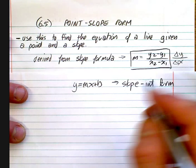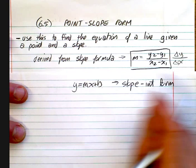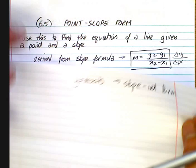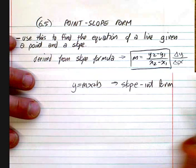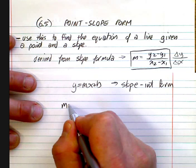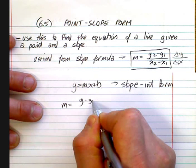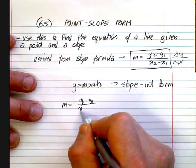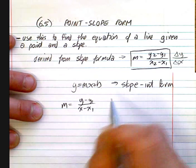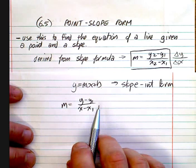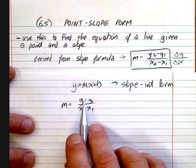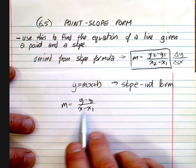Now, if you rearrange this — if you said, let's just use y minus y1. Same thing. It doesn't matter if it's y2 minus y1; it's just two x's and two y's.